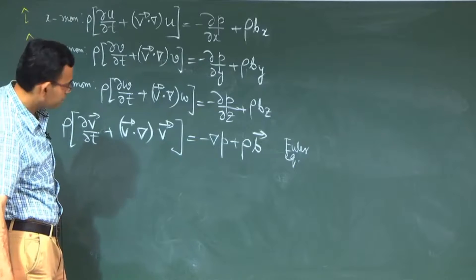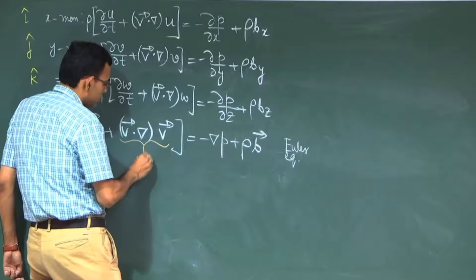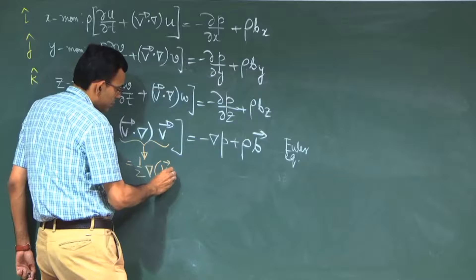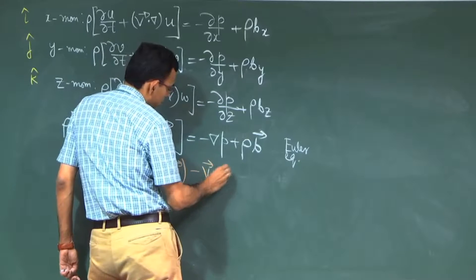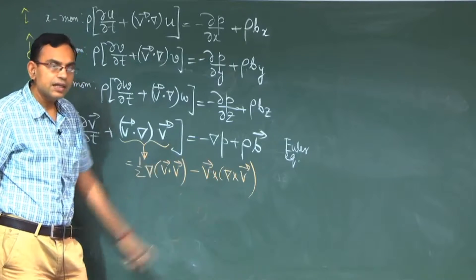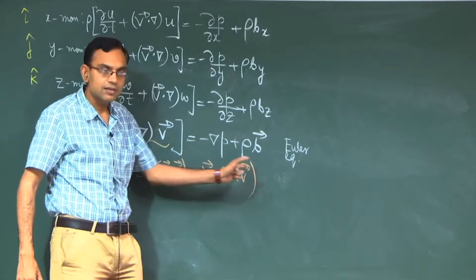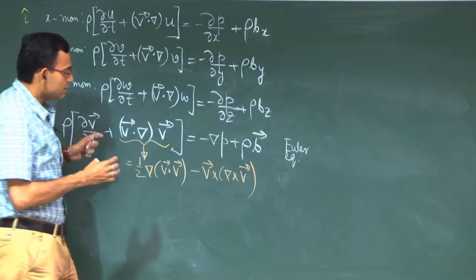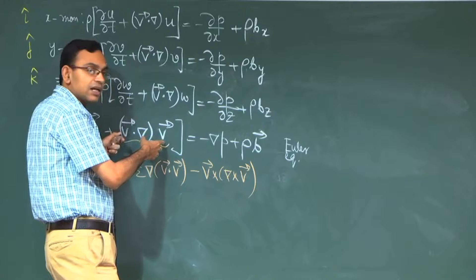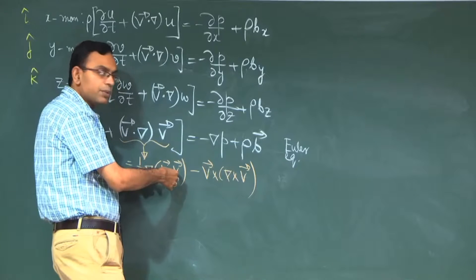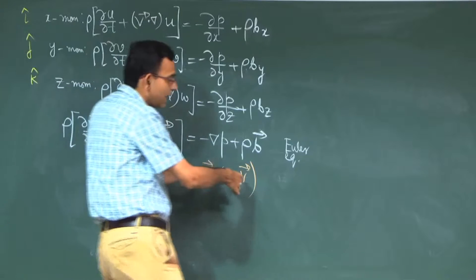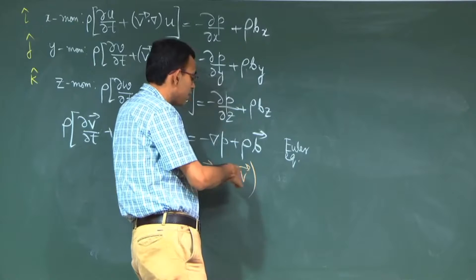We can simplify further using a well-known vector identity from vector calculus. This identity shows that the convective acceleration term can be related to the gradient of V·V (which is V² representing kinetic energy divided by 2) and the cross product of velocity with vorticity (curl of the velocity vector). So acceleration is related to a combination of kinetic energy gradient and velocity-vorticity cross product.